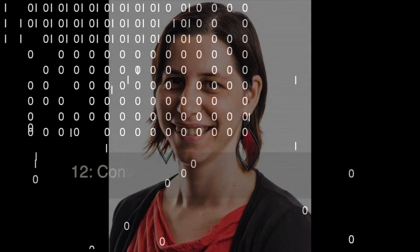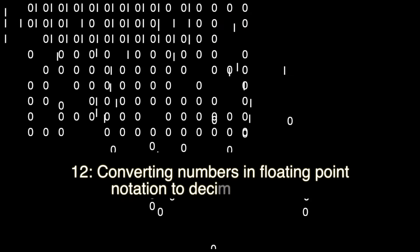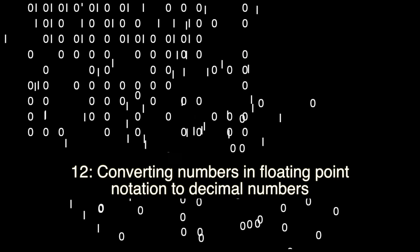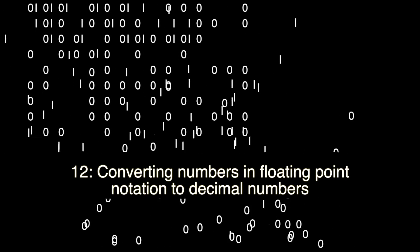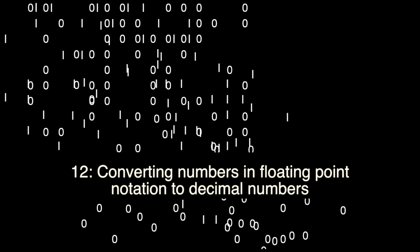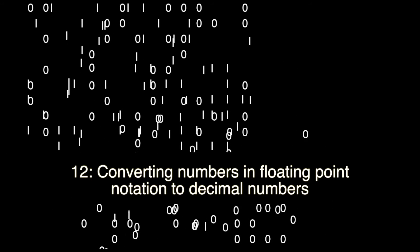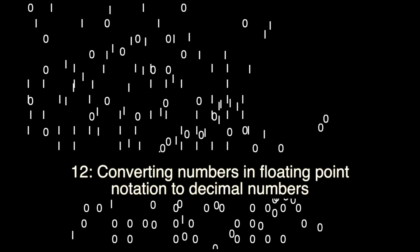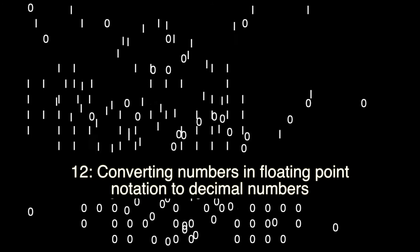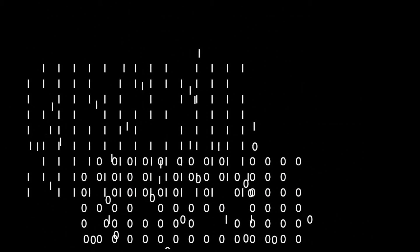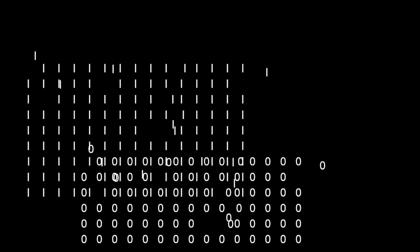Welcome to the next video in the binary series. In the previous video we learnt how to convert numbers to floating-point notation. In this video I will show you how to do the other way around — how to convert a floating-point notation number back into ordinary decimal numbers.